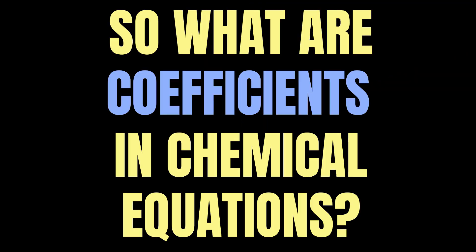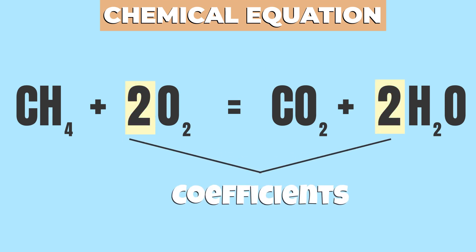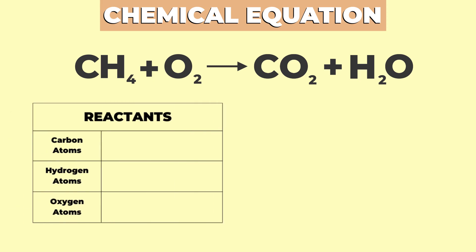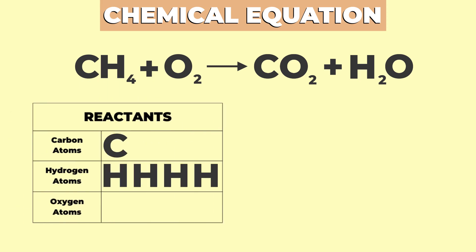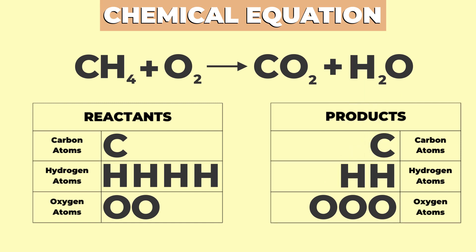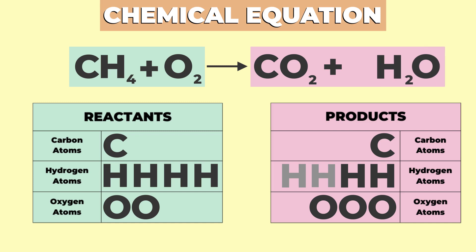So what are coefficients in chemical equations? To make sure a chemical equation is balanced, we place coefficients beside the chemical formula of the substances. In the reaction of methane and oxygen, the reactant side has one carbon atom, four hydrogen atoms, and two oxygen atoms. On the product side, there is one carbon atom, three oxygen atoms, and two hydrogen atoms. According to the law of conservation of mass, the number of atoms of each element on the reactant side needs to be the same as on the product side. The product side is short of two hydrogen atoms, so we would need two molecules of water. To show this, we use coefficients.